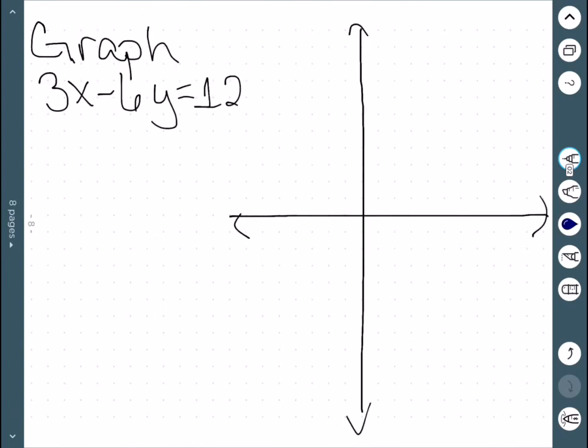Here, our last example, we'll graph this general form. The easiest way to graph something in general form is using intercepts. If I let y = 0, I get 3x = 12, which means x = 4. So I cross my x-axis at 4.